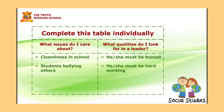You will make a table. On one side, write: what issues do I care about? On the other side: what qualities do I look for in a leader? At the top, write the instruction: complete this table individually. Now think — what type of issues will you choose or are you worried about? For example, cleanliness in the class.